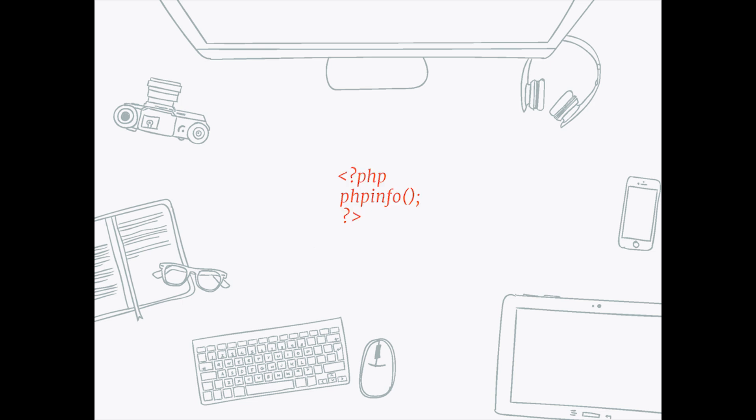Type this exact code here and save the file. Remember, you are only working on test.php today — we're not going to use any other file names. After you type in this code, refresh the page and see if anything is displayed. If you see information on the page, then your PHP is installed, and you are ready to write some code.